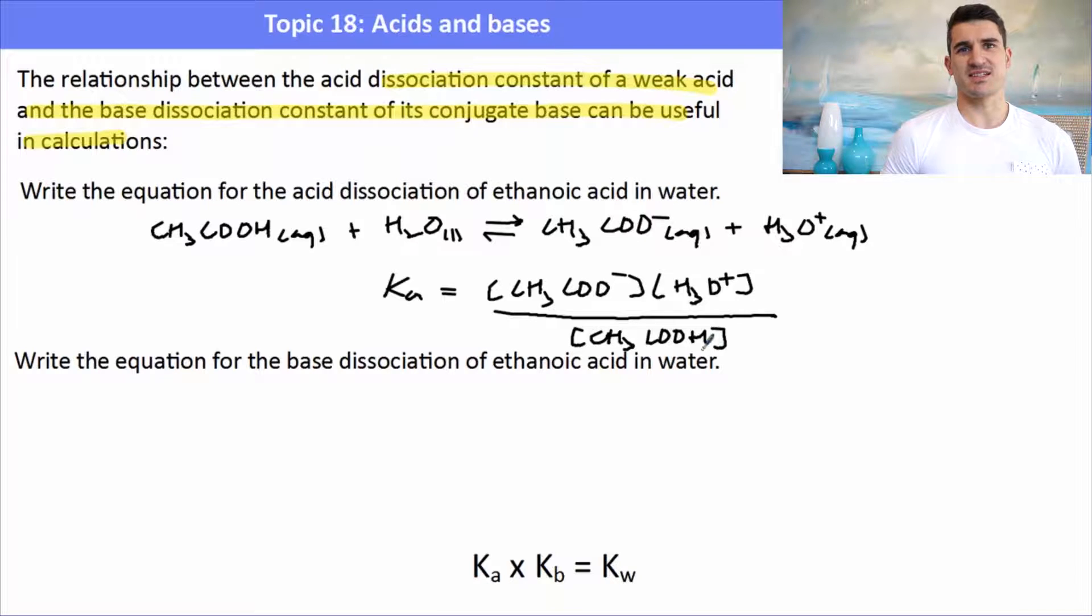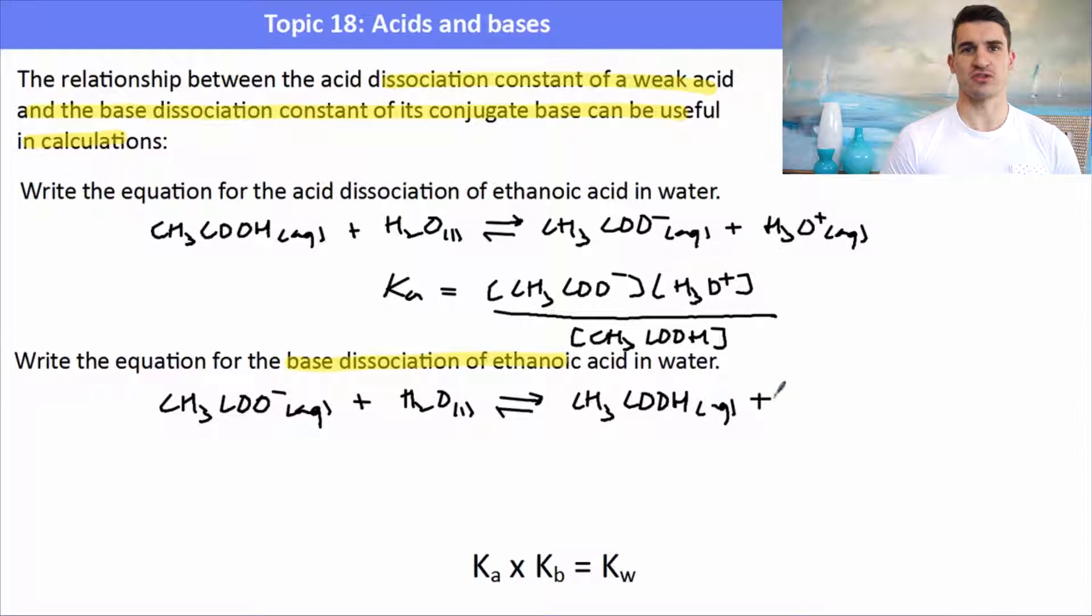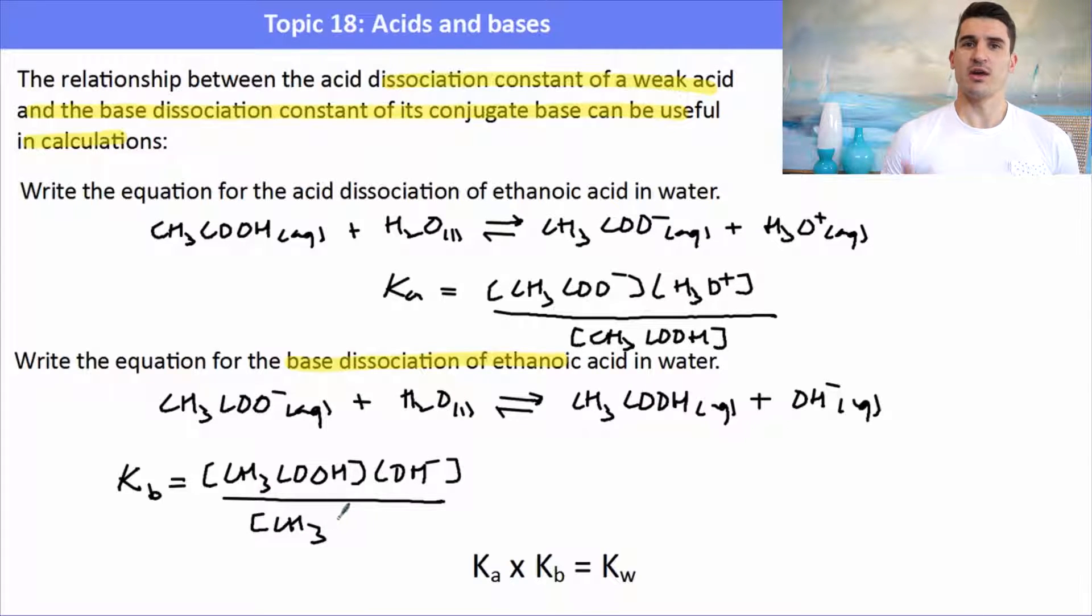We can also write the base dissociation constant of ethanoic acid in water. Now ethanoic acid's base is the ethanoate ion, so here when we talk about that we're talking about something like sodium ethanoate and how it would dissociate in water and then what it actually does in water. So we have our ethanoate ion, it will interact with the water molecules to form ethanoic acid and a hydroxide ion because the ethanoate ion is a weak base. So we can write the base dissociation constant again by doing the concentration of the products divided by the concentration of in this case just the ethanoate ion because it's the base to give us our Kb. Now if I got those two things together and equated them, made them equal to each other, we would find that Ka times Kb equals Kw.